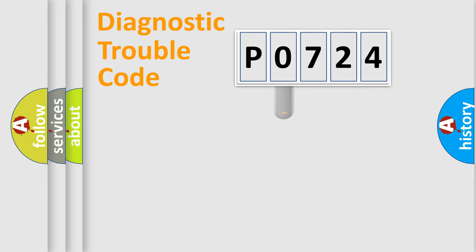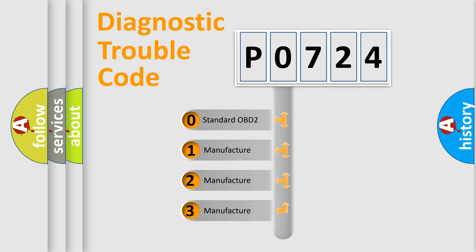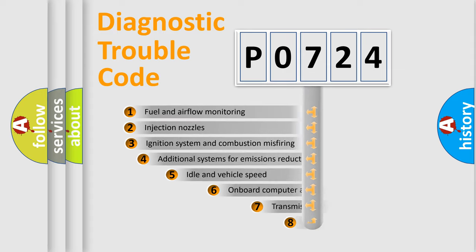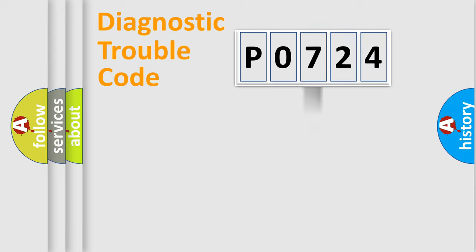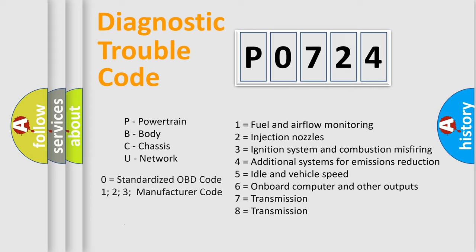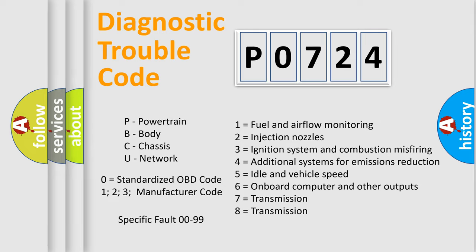This distribution is defined in the first character of the code. If the second character is zero, it is a standardized error. In the case of numbers 1, 2, or 3, it is a more manufacturer-specific expression of a car-specific error. The third character specifies a subset of errors. The distribution shown is valid only for the standardized DTC code, and only the last two characters define the specific fault of the group. This division is valid only if the second character is zero.